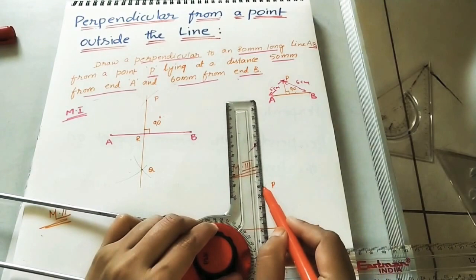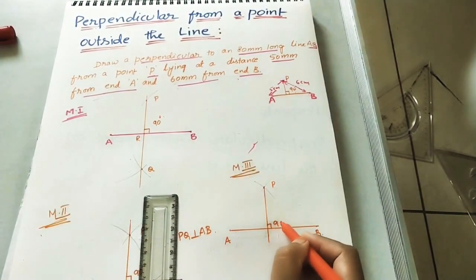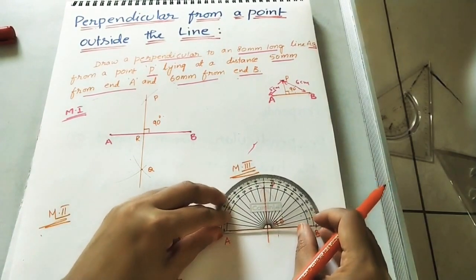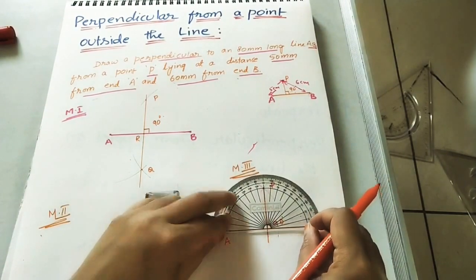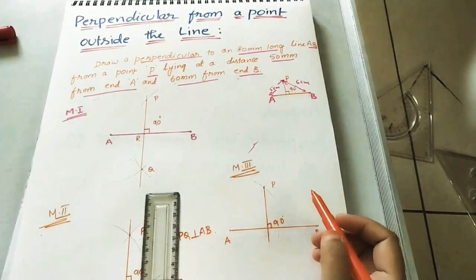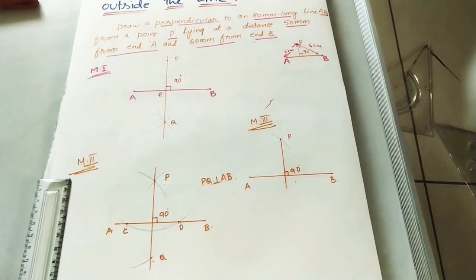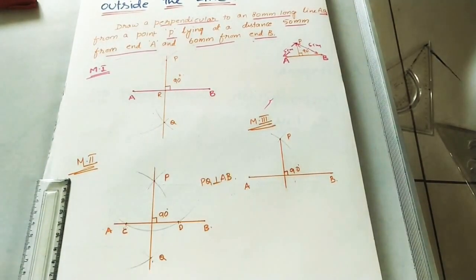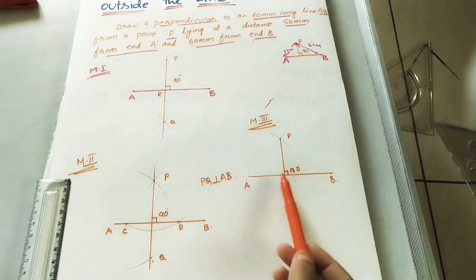With the drafter, do the perpendicular line. This is a 90 degrees. Check whether it is 90 or not by using this protractor. So, this is a 90. These are the methods of doing the perpendicular line on a given line from the outside point. These two methods are by using the compass and this method is by using the drafter. Thank you.